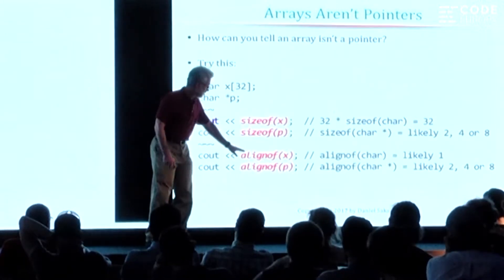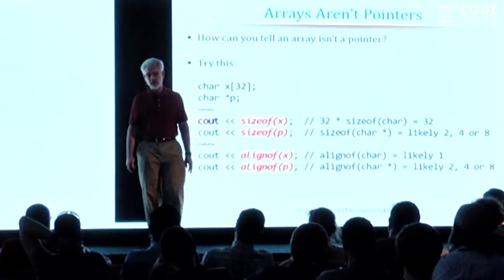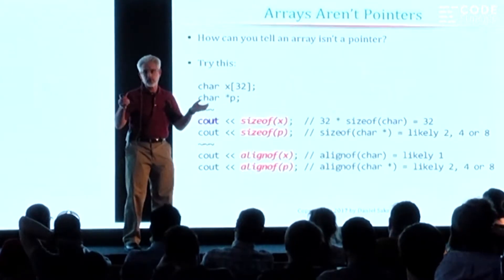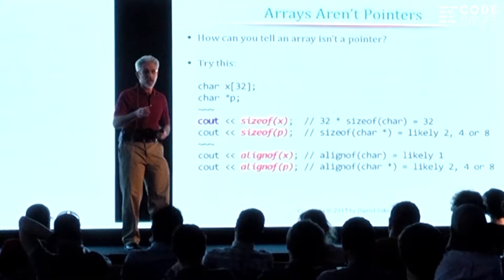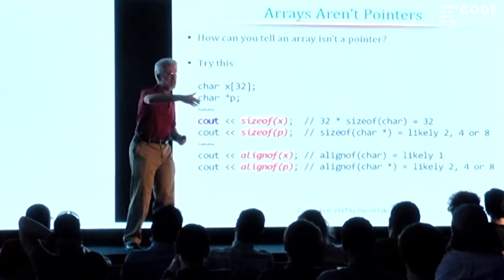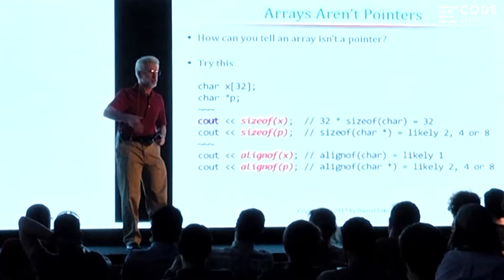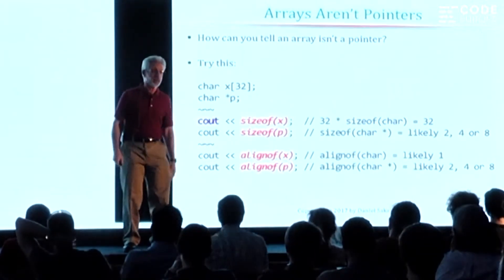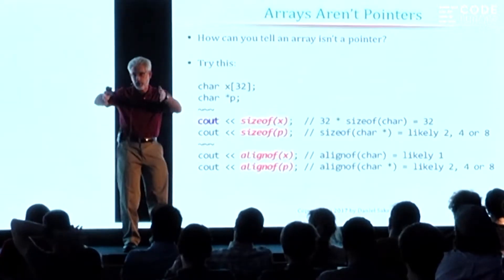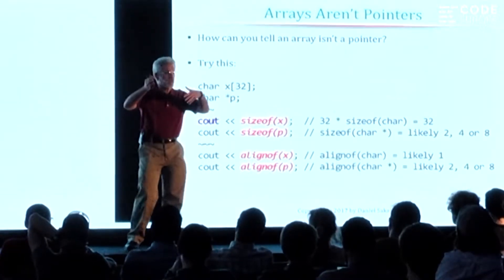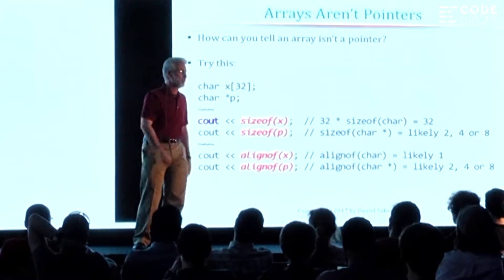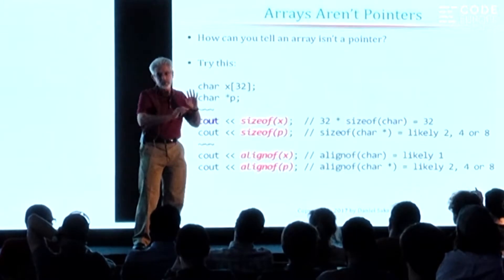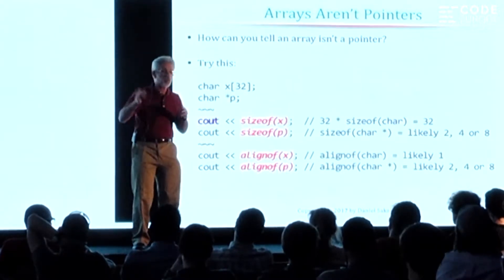There's also a built-in alignof operator in C and C++ that will return information about the alignment characteristics. A lot of processors have a requirement that certain data must reside at addresses which are multiples of a certain value. So it's very common that a 32-bit architecture would have four-byte integers residing on addresses that are a multiple of four, and if you have an integer at some other address you get spurious behavior.